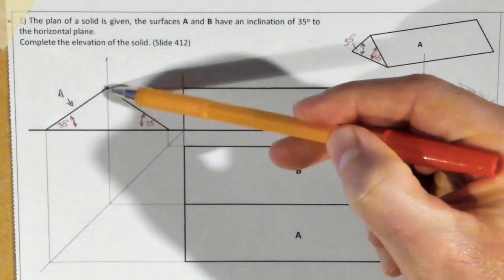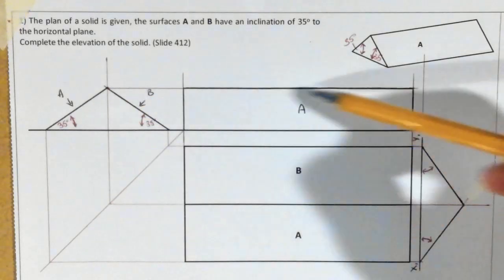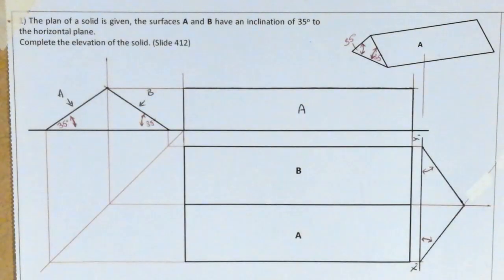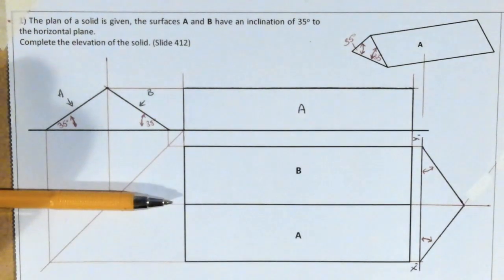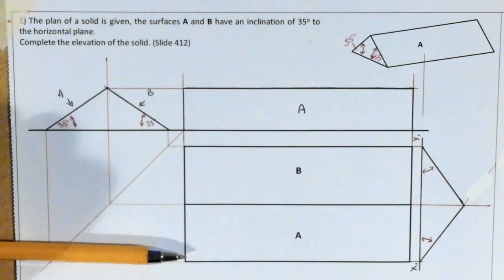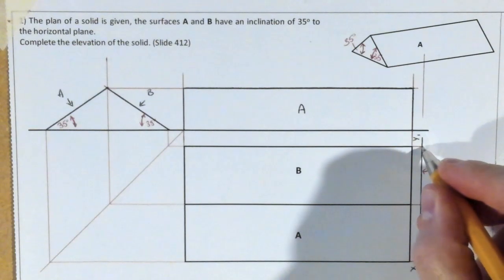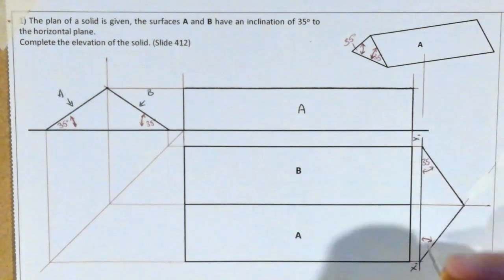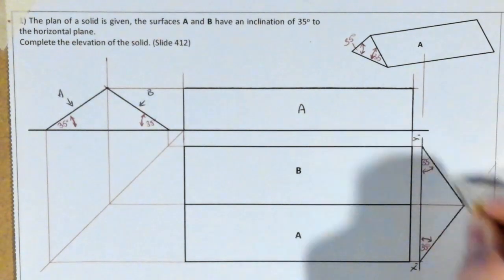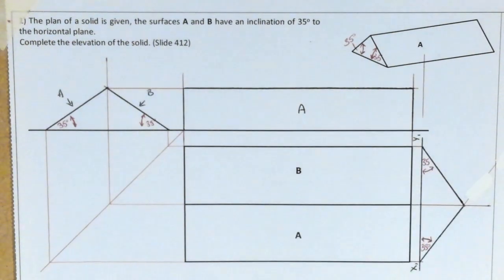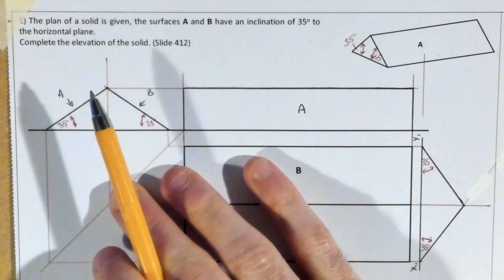From that we determined the height, and by projecting that across we completed the elevation view. The alternative method was looking perpendicular to the face, which showed us the true shape. At each corner we used our protractor to project up at 35 degrees either way, giving the exact same result. Both methods are very useful — it's just about working out which one works best for your question.